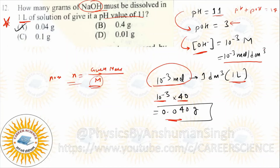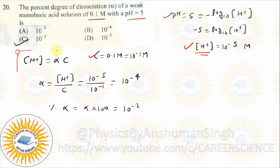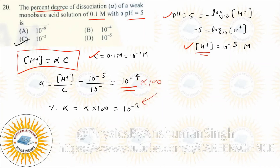Next question: percent degree of dissociation of a weak monobasic acid at 0.1 molar with pH = 5. C is given and pH is given. From pH find [H+] ion concentration, then use H+ = alpha × C to get alpha. Multiply by 100 to get percentage — answer is 10 × 10⁻⁴ multiplied by 100 to get 10⁻².